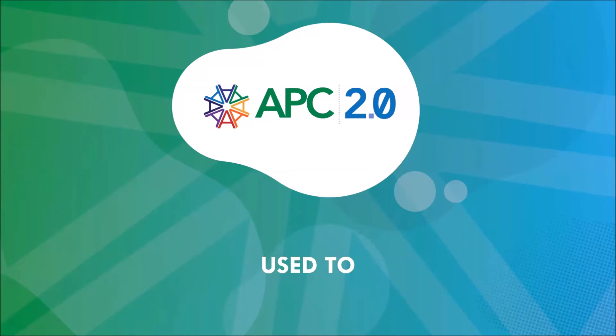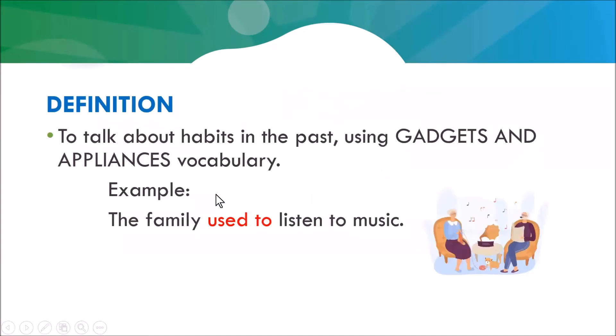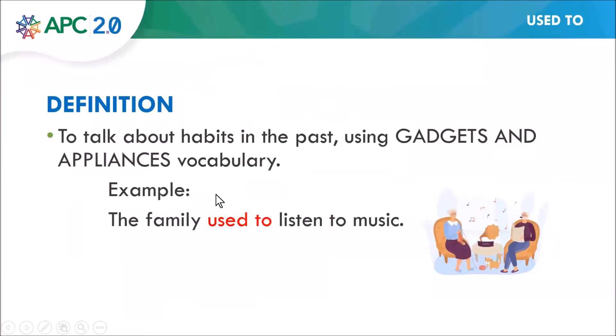So first we have the definition of 'used to.' As I told you, 'used to' is used to talk about habits in the past. In this unit we are going to be using gadgets and appliances vocabulary that we covered in the last class. If you remember, for example, this is a record player.